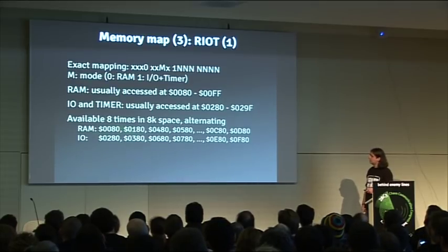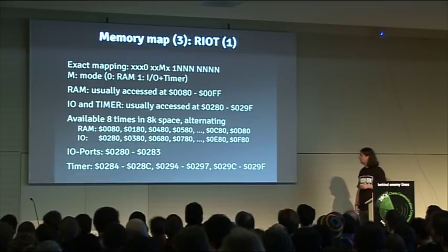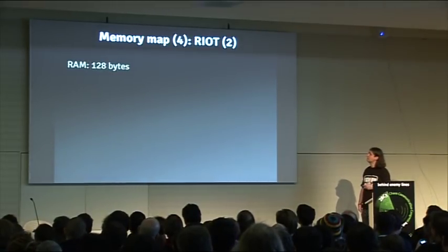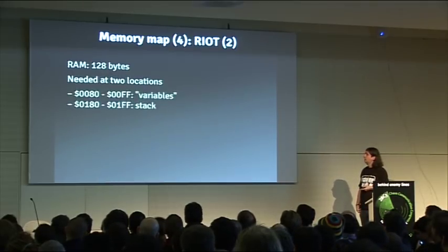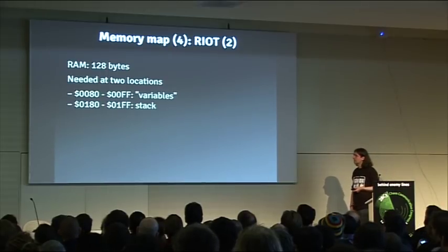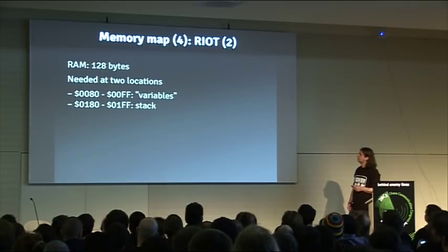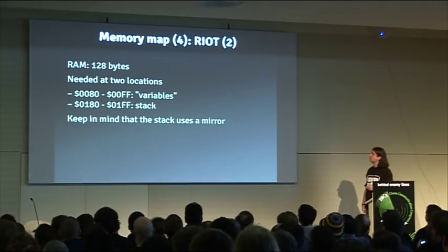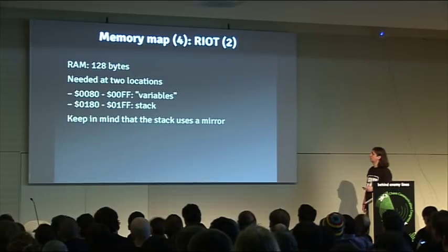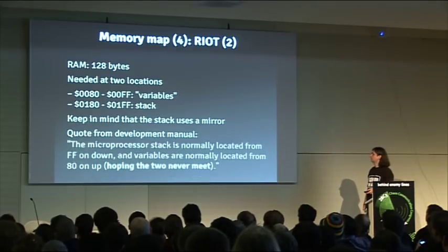The IO ports and timer addresses, the RAM — 128 bytes as mentioned — is accessed at two locations: for your game status variables and for the stack which is at 0x180. So what you've got there is pretty limited. The manual states the stack will be used from 0x1FF down. Keep in mind you are using mirrors, so you don't have the 128 bytes twice — only once. My favorite quote from the developer's manual speaks to just how constrained the memory situation is.